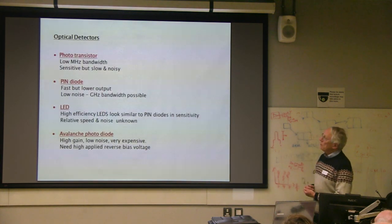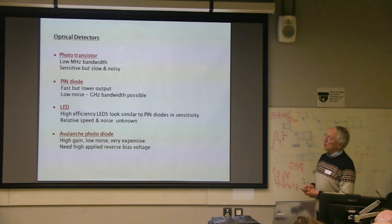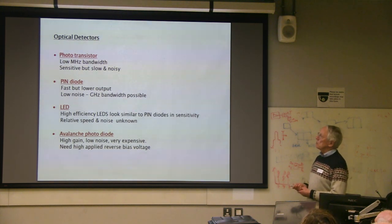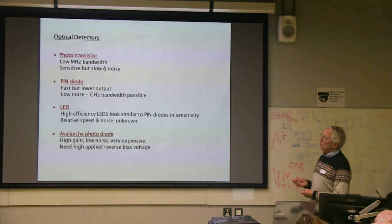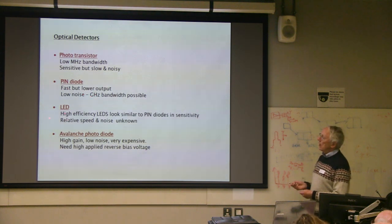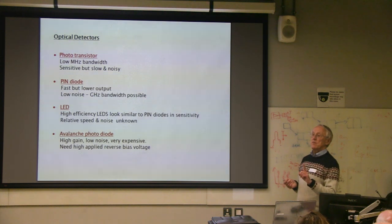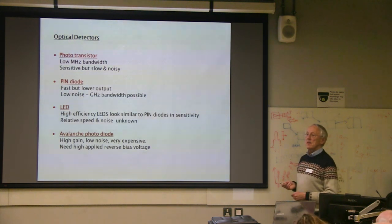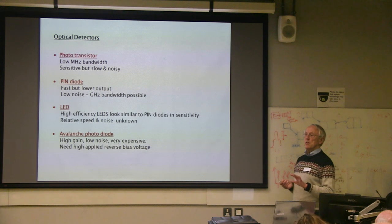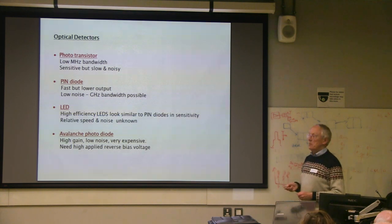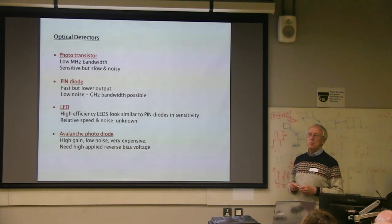For optical detectors there are various options: photo transistors, PIN diodes — which are what we normally use — and LEDs themselves, which can act as optical detectors, allowing you to build a transceiver from a single LED. You can use it for transmit and receive and do clever tricks to improve the sensitivity. Another option is avalanche photodiodes, but these are very expensive — around a thousand dollars each.